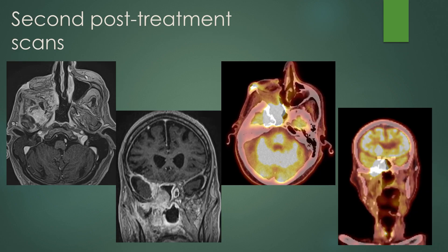On the short-term follow-up second post-treatment scan, that area has now declared itself. There is now mass-like enhancement posterior to the flap in the infratemporal fossa involving the pterygoid musculature, extending to the skull base and Meckel's cave. Thickening and nodular enhancement of the dura, extending into the sphenoid sinus, with FDG PET confirming abnormal uptake throughout the areas of abnormal enhancement on MRI. This is definite progression of disease.